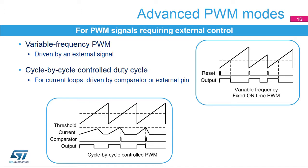Another mode allows the duty cycle to be controlled by hardware with either an on-chip comparator or an off-chip signal. The PWM operates at a fixed frequency, with the maximum duty cycle set by the compare register and the actual value controlled cycle by cycle. This is used for applications requiring current-controlled PWMs, typically for driving DC motors or solenoids. A comparator monitors the peak current value into the load; as soon as the current exceeds a programmed threshold, the comparator resets the PWM output, which is then automatically restarted at the next PWM period, providing a controlled peak current value.